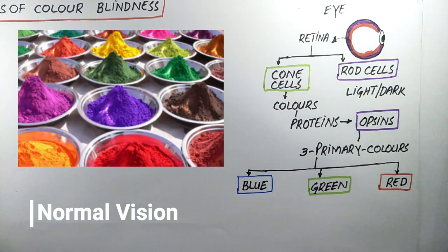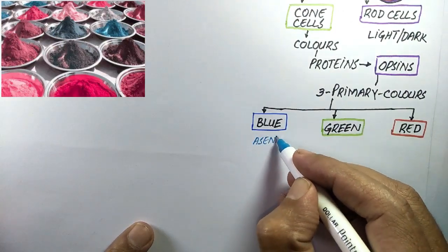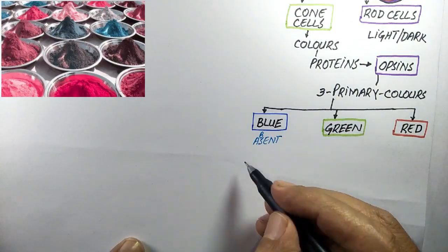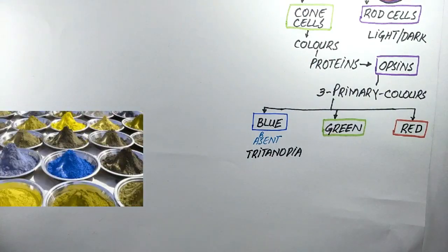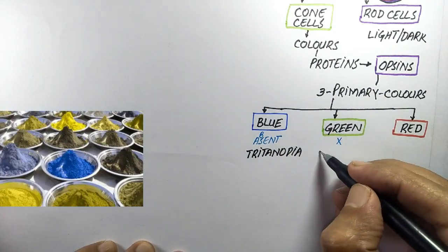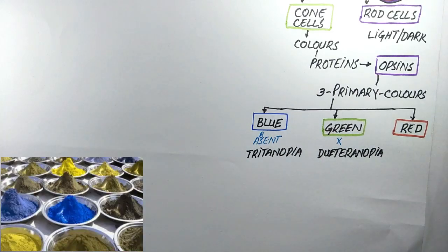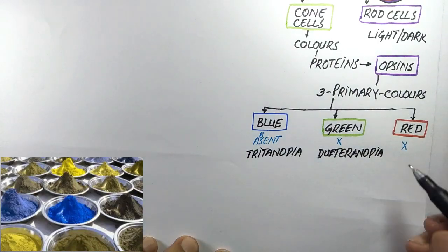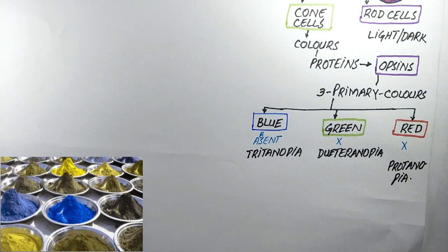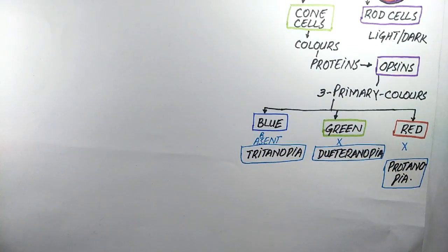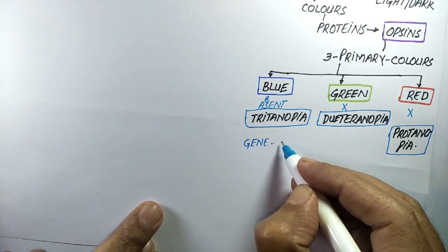If a person does not have opsins for blue color, the condition is known as tritanopia. The absence of green color opsins is called deuteranopia. The absence of red opsins is called protanopia, in which a person cannot perceive red color or shades of red.